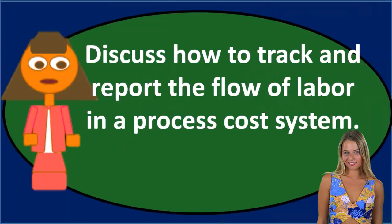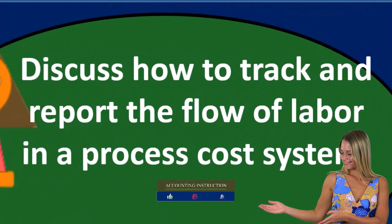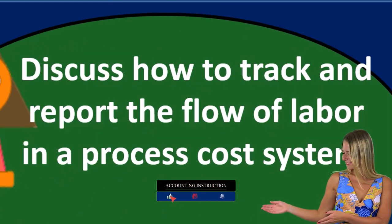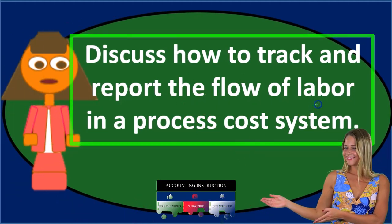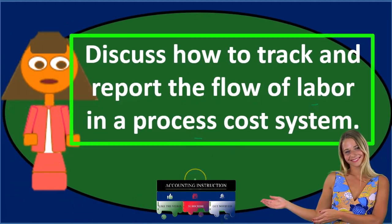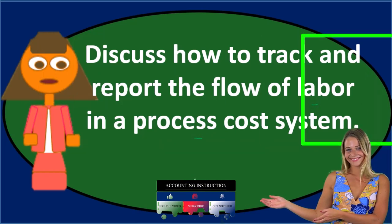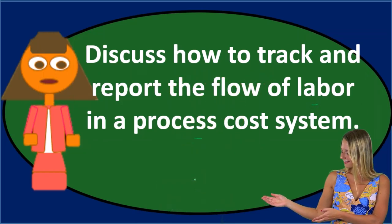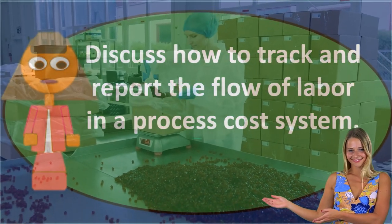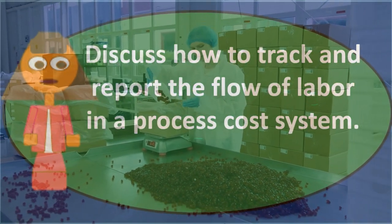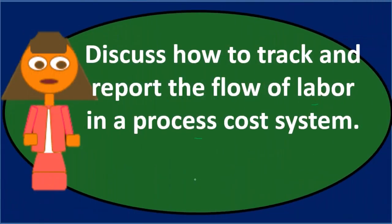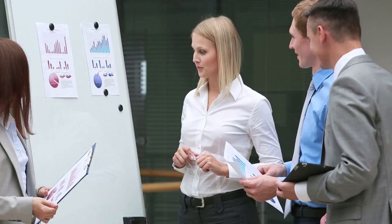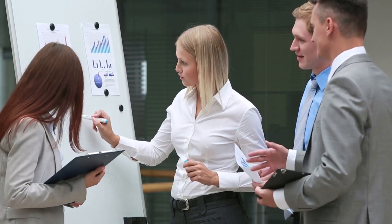When we see a discussion question or essay question like this, we want to pick out the key topics: tracking and reporting the flow of labor in a process cost system. In a process cost system, we're typically thinking of a manufacturing-type company. Manufacturing companies that produce or make inventory usually use one of two systems — a process cost system or a job cost system — or a hybrid of both. Here we're focusing in on the process cost system.